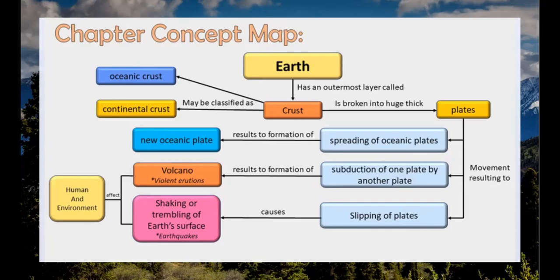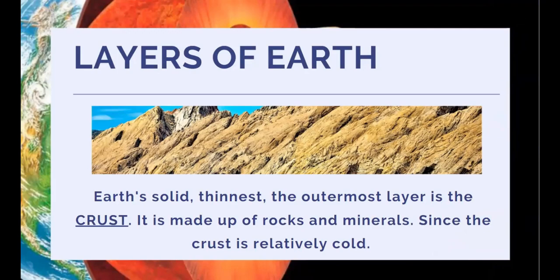The Earth's solid, thinnest, and outermost layer is the crust. It is made out of rocks and minerals. Since the crust is relatively cold, it is rocky and brittle. It can fracture during earthquakes.